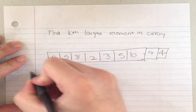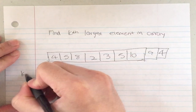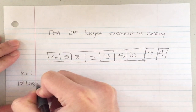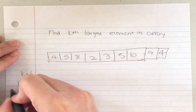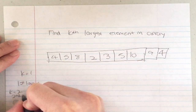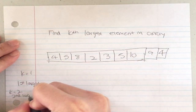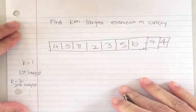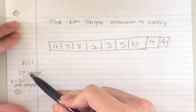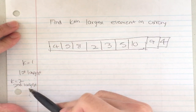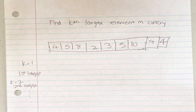The kth largest element means: if k equals one, I want to find the first largest number; if k equals two, I want to find the second largest number, and so on.